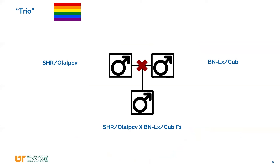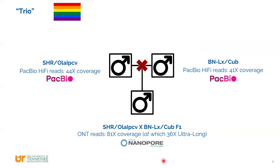For the two inbred strains, we have PacBio Hi-Fi reads at roughly 40x coverage. For the F1 sample, we have Nanopore reads at 81x coverage, of which 36x are ultra-long reads — longer than 100 kilobases.